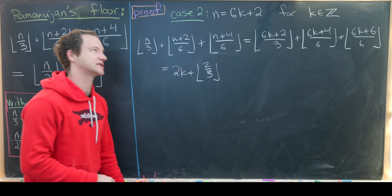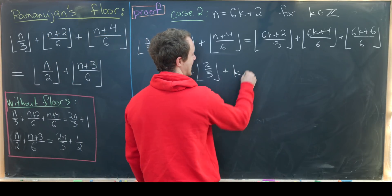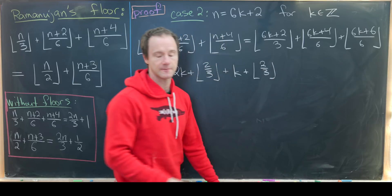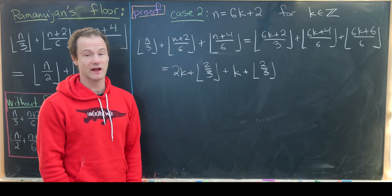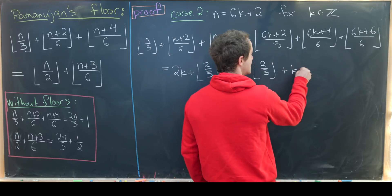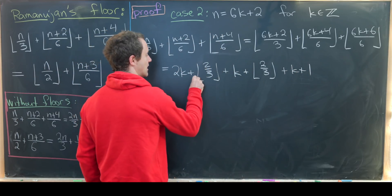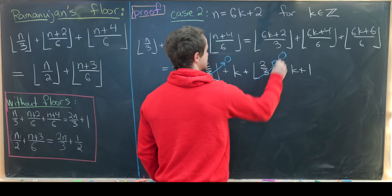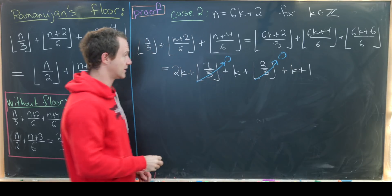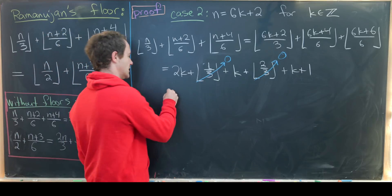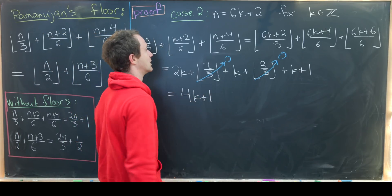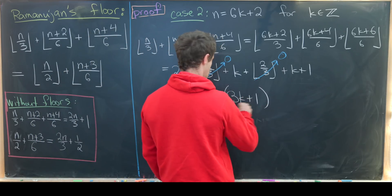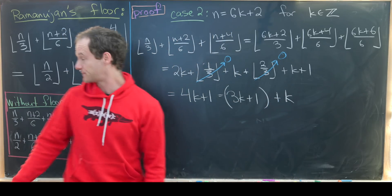The last term, (6k+6)/6, is an integer equal to k+1, so we don't need to worry about a floor there. Now floor(2/3) = 0 and floor(4/6) = floor(2/3) = 0 — note one term should be 1/3, leaving us with 2k + k + k + 1 = 4k + 1.